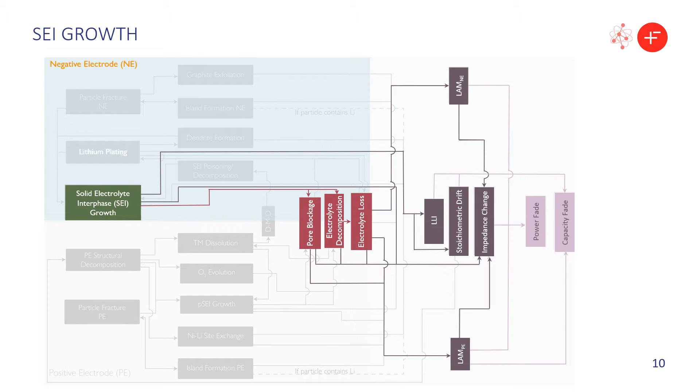SEI growth is a primary mechanism occurring in the negative electrode. When the electrolyte is added to the cell during manufacture, the highly reactive liquid electrolyte and the solid electrode interact to form a layer between them called the solid electrolyte interface. This layer grows further with time, but the rate drops as it thickens. If it gets too thick, it can slow down lithium from diffusing into the electrode or block it altogether. Lithium may become trapped within the SEI, leading to loss of lithium inventory and lower capacity.